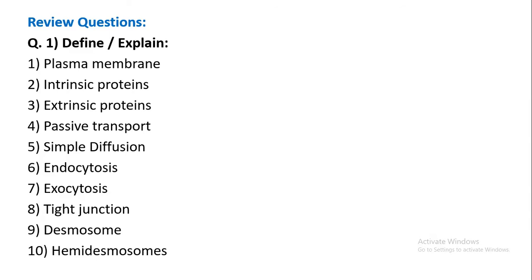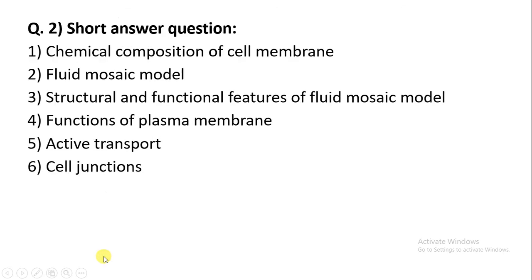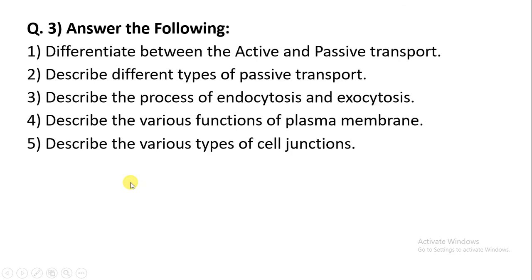This is how our chapter on plasma membrane ends. Some exam questions include: define plasma membrane, intrinsic protein, extrinsic protein, passive transport, simple diffusion, endocytosis, exocytosis, tight junctions, desmosome, and hemidesmosome. Short answer topics include chemical composition of cell membrane, fluid mosaic model, active transport, and cell junctions. Long answer topics include differentiating active and passive transport, describing types of passive transport, endocytosis and exocytosis, and various types of cell junctions. Thank you very much.